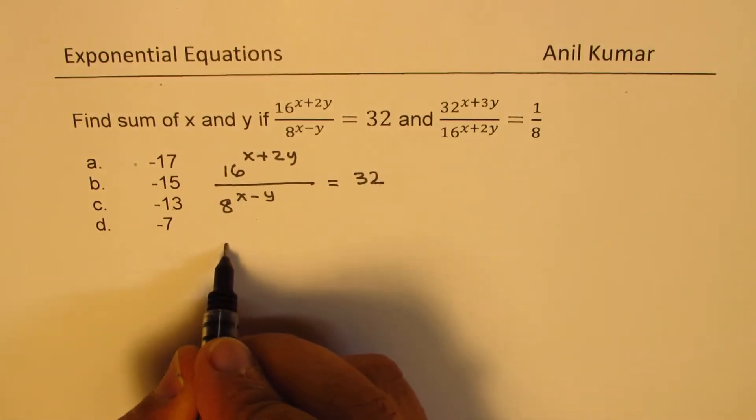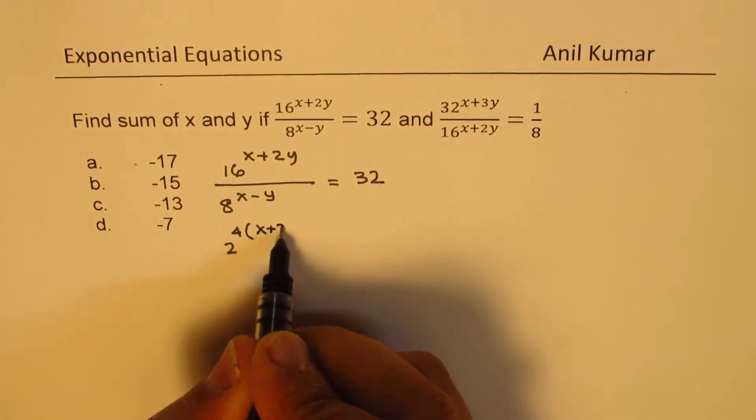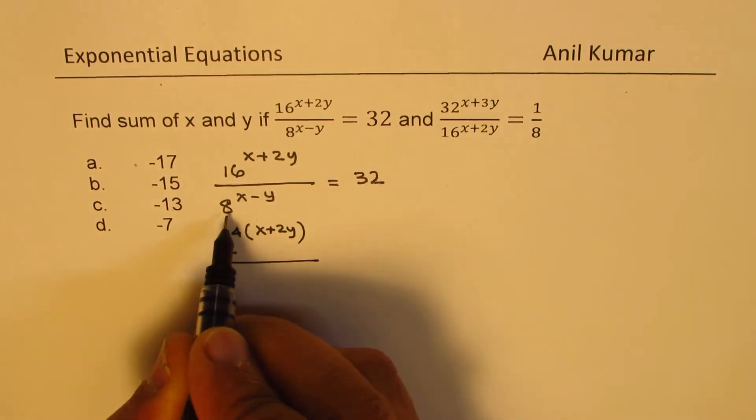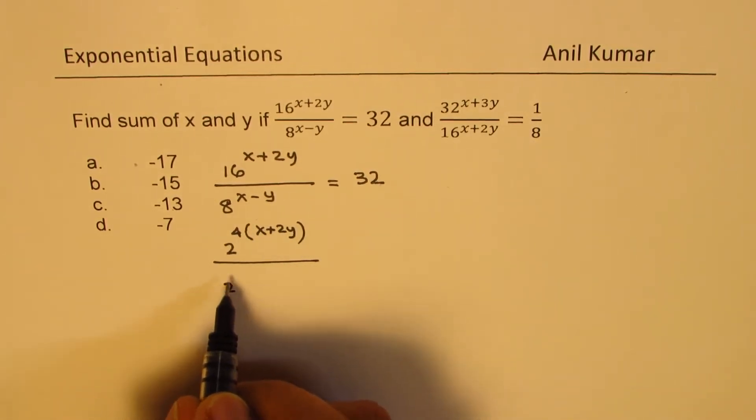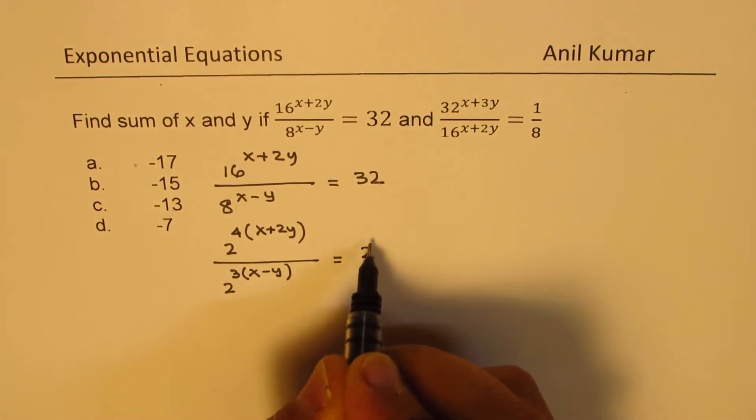16 is 2 to the power of 4, so we could write this as 2 to the power of 4 times x plus 2y. 8 is 2 to the power of 3, so it becomes 2 to the power of 3 times x minus y equals 32, which is 2 to the power of 5.